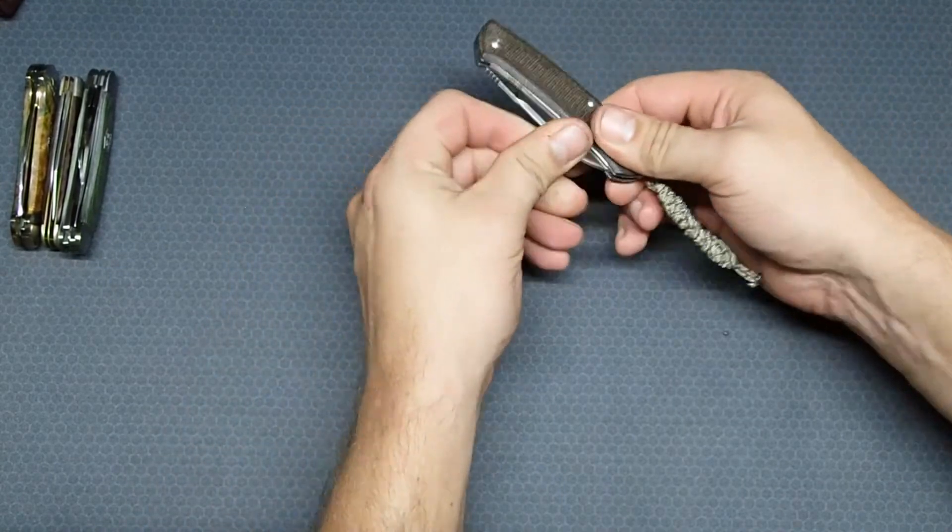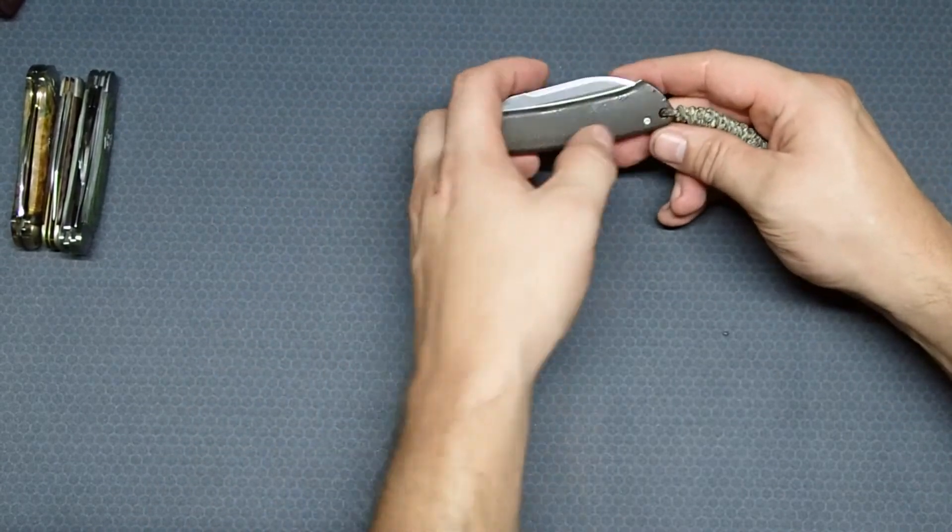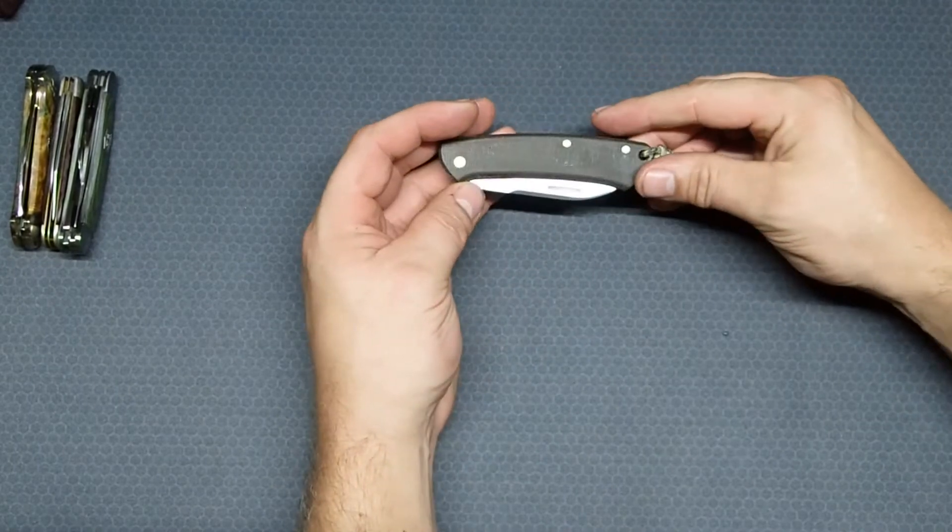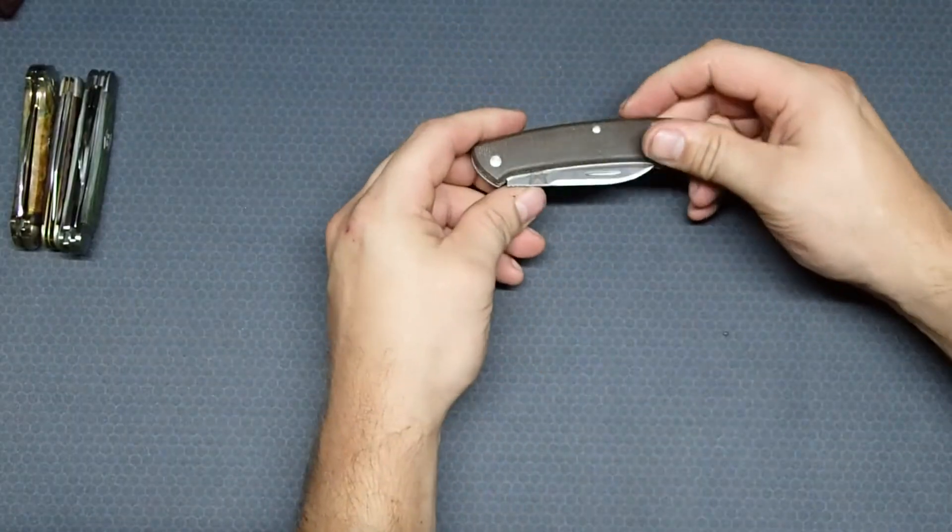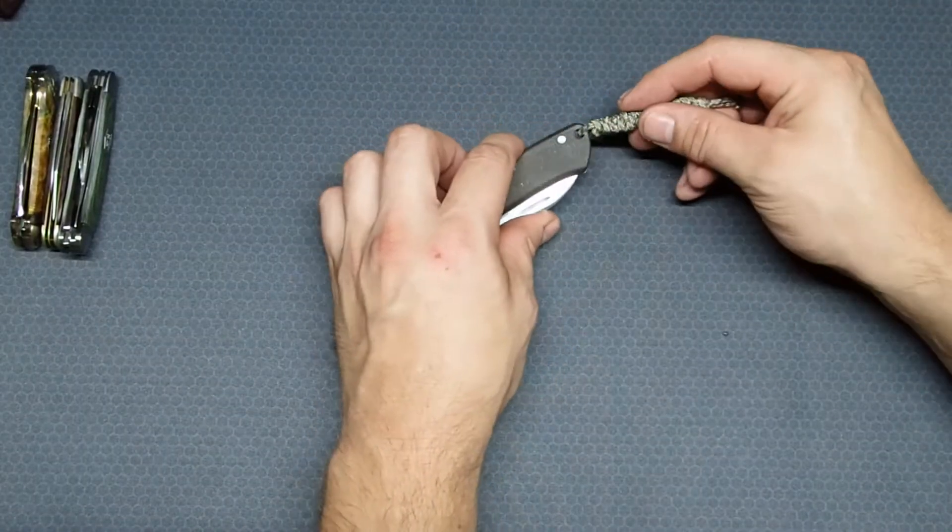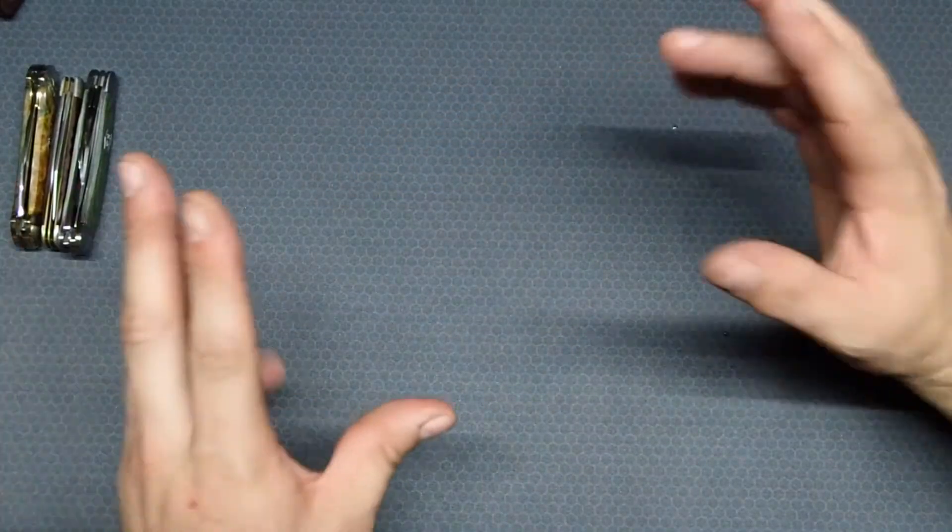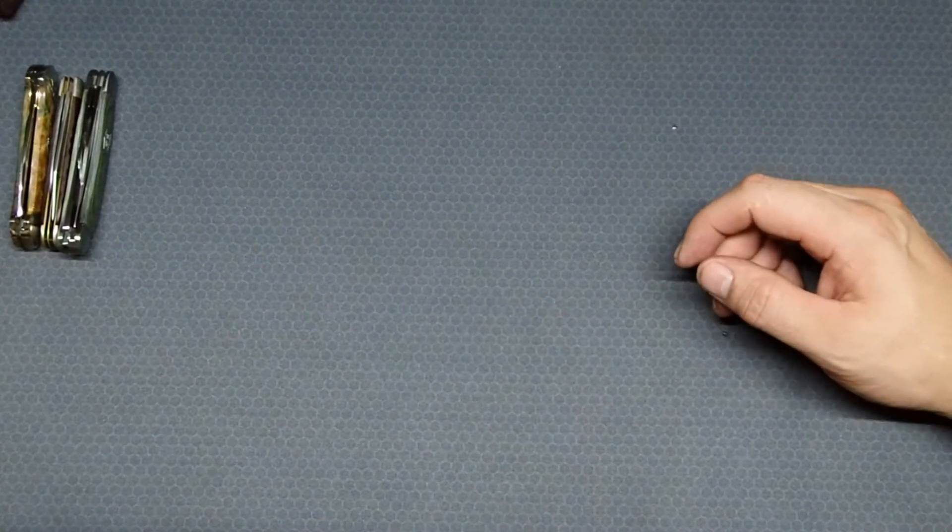So other than the micarta and the blade material being S30V, those are really the upgrades. And then the screws here. But it doesn't have pocket clip, doesn't have any other jazz to it. It's a very standardized slip joint, very well done by Benchmade. Slight modernization to it, not a whole lot.